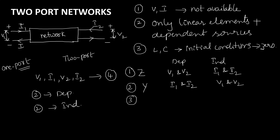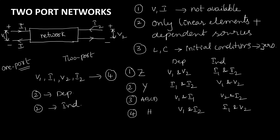The third one is ABCD parameters, also called transmission parameters. In ABCD parameters, V1 and I1 are considered as dependent, and V2 and I2 are the independent variables. We can also have inverse transmission parameters where V2 and I2 are the dependent variables and I1 and V2 are independent. Similarly there are hybrid parameters or G parameters. For inverse ABCD and inverse hybrid, you simply switch the dependent and independent variables.